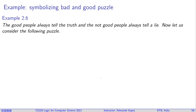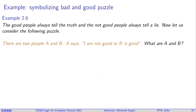Let's look at another example. Here we are going to encode a puzzle and turn it into a formula. Suppose you have this background information: good people always tell the truth, and not-good people always tell a lie. Now consider the following puzzle: there are two people, A and B. A says 'I am not good or B is good.' What are A and B — is A good or bad, and is B good or bad?